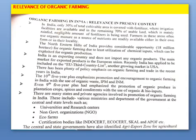The next topic is the relevance of organic farming. In India, only 30% of total cultivable land area is covered with fertilizer where irrigation facilities are available. The remaining 70% is mainly under rain-fed conditions where the use of fertilizer is limited. Such land is considered as land under organic farming where only organic manure is the source of nutrients. The North Eastern hills of India provide considerable opportunity for organic farming due to the least utilization of chemical inputs, covering 18 million hectares.